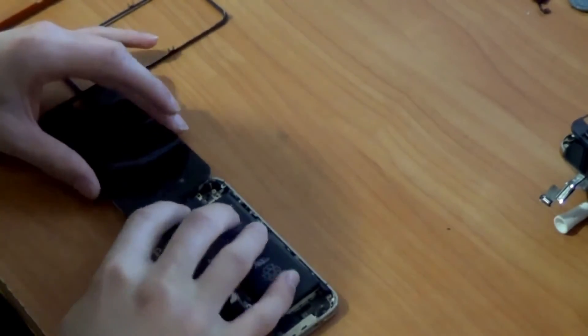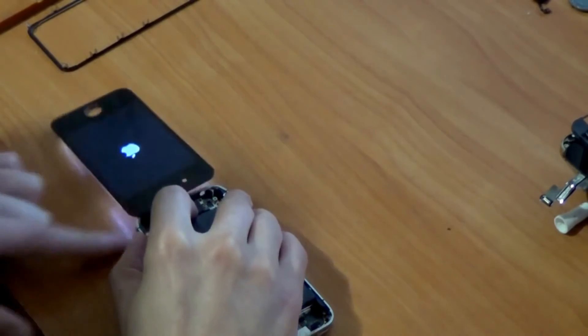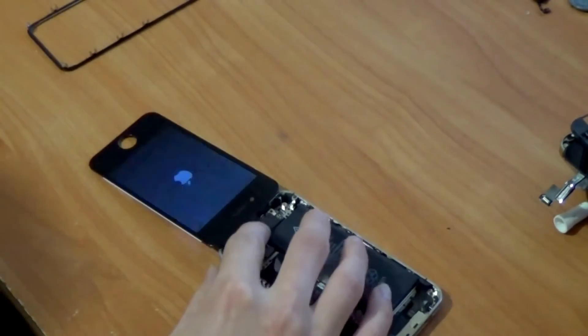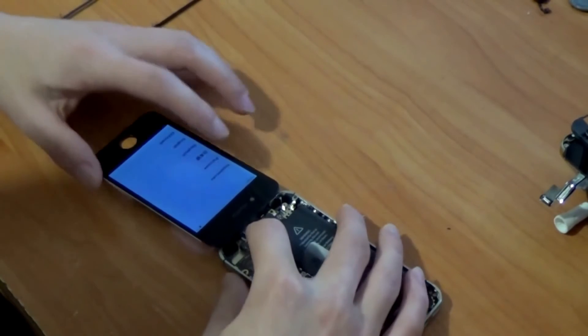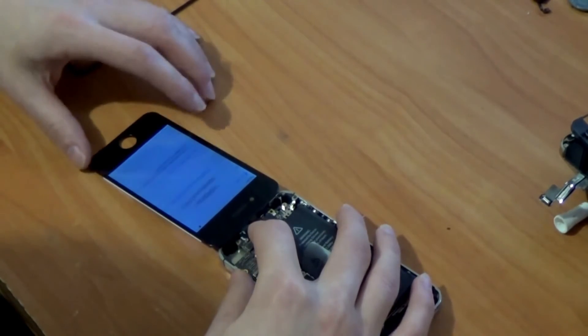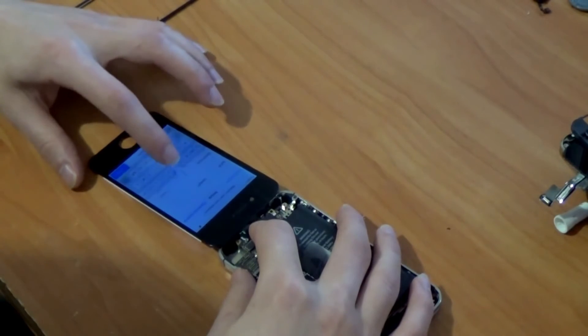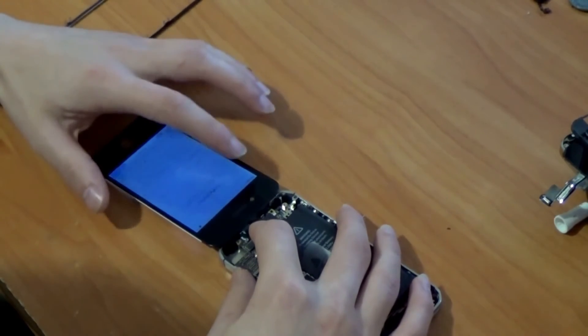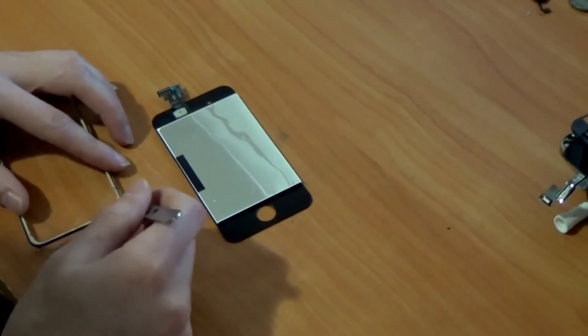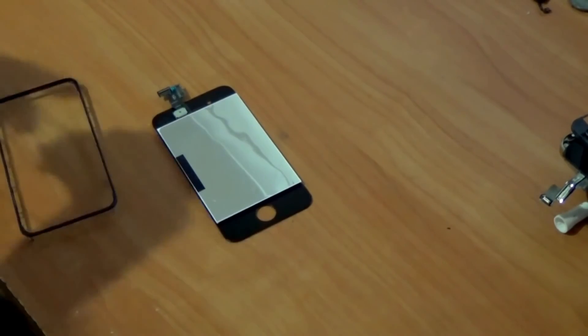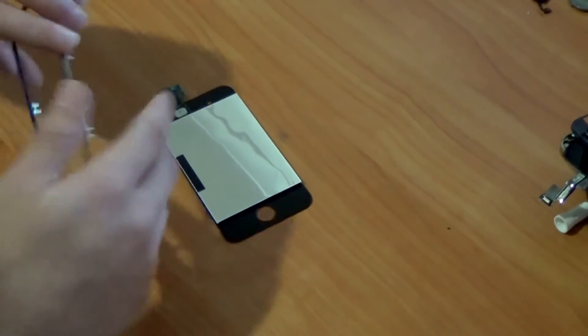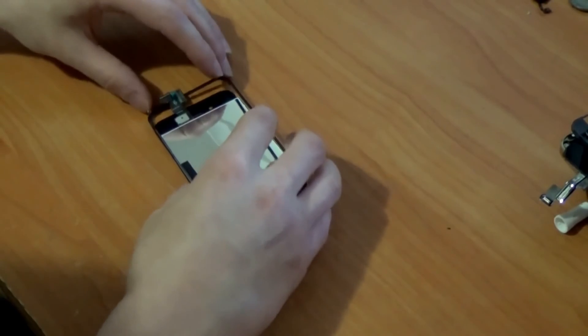Now I perform final check of the screen. Everything works fine. Glue up the frame. Frame is new with two-sided adhesive tape. Prepare the tape and press it to the mold.